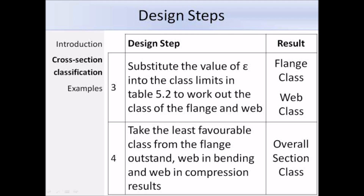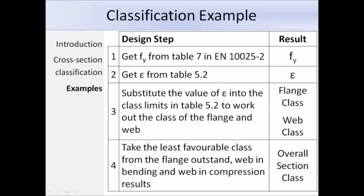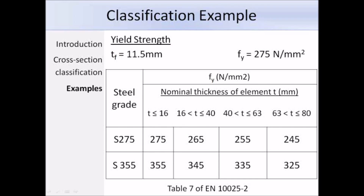Now for an example from the SCI (BCSA) website: a 356 × 171 × 51 UB in grade S275 steel. First, classify the section. The section properties needed include the relevant dimensions. Step 1 — determine yield strength: from table 7 of EN 10025-2, the largest thickness is the flange thickness T_f = 11.5 mm. Since 11.5 mm < 16 mm and the steel grade is S275, reading across the table gives f_y = 275 N/mm².